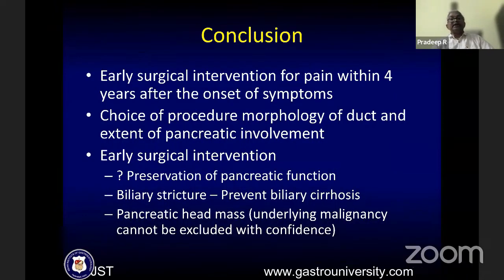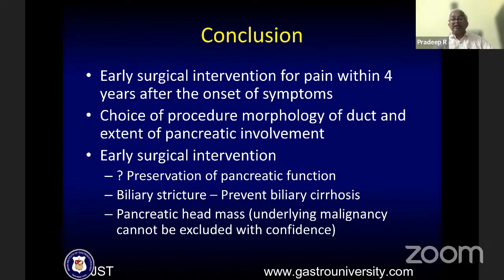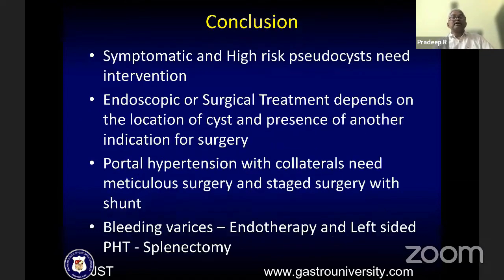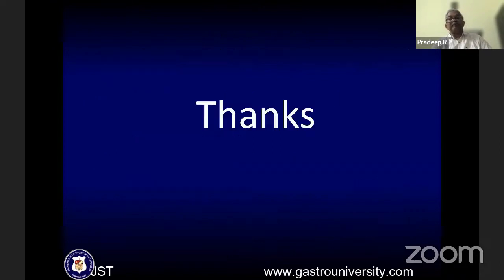To conclude: early surgical intervention for pain within four years after onset of symptoms gives good long-term results, and the choice of procedure is guided by duct morphology and extent of pancreatic involvement. Early surgical intervention probably preserves pancreatic function. Early intervention in biliary stricture prevents biliary cirrhosis. Pancreatic head mass requires early intervention, particularly when underlying malignancy cannot be excluded with confidence. Symptomatic high-risk pseudocyst needs intervention. Portal hypertension with collaterals needs meticulous or staged surgery with a shunt. Bleeding varices requires endotherapy, and left-sided portal hypertension requires splenectomy for permanent cure.